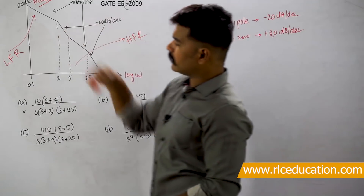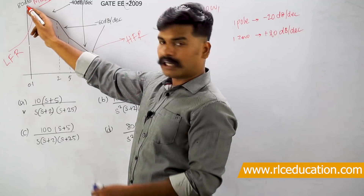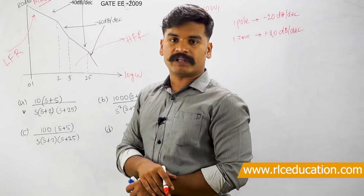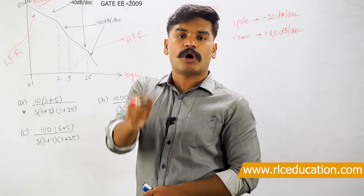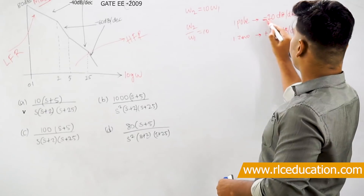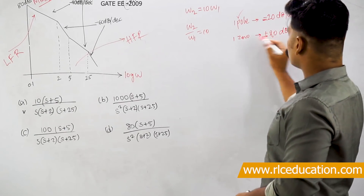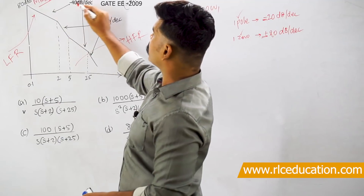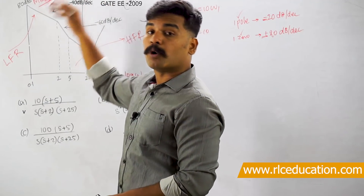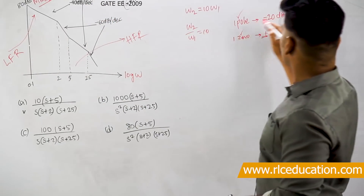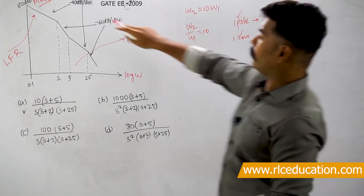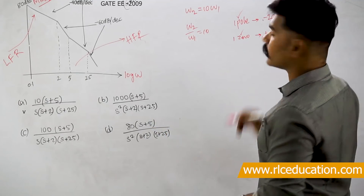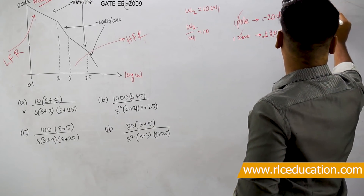When you observe the low frequency region at the y-axis, the curve itself started with a slope. When a curve starts with a slope at the low frequency region, it indicates there is a zero or pole at the origin. If that slope is negative, there is a pole at origin; if positive, there is a zero at origin. From this plot, you can see a negatively going slope of minus 40 dB per decade, meaning there are poles at origin. Since one pole gives minus 20 dB per decade, a slope of minus 40 means there are two poles at origin — that is, 1/s².